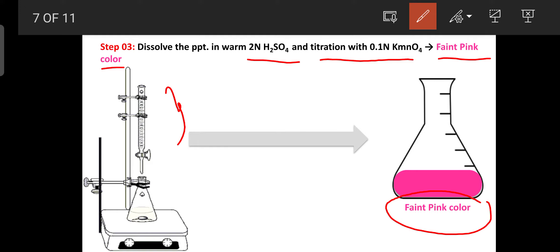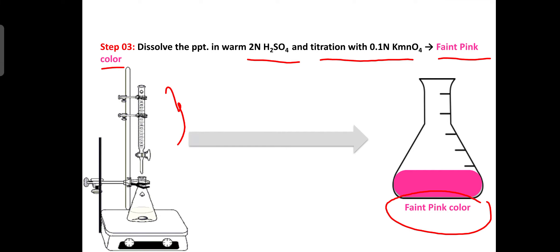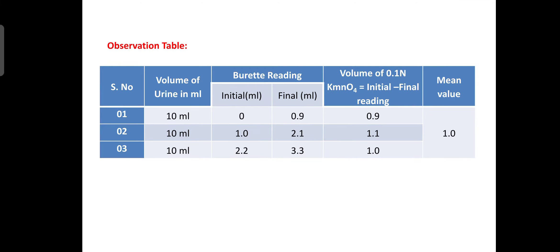Taking 10 ml of urine through steps one, two, and three: the first buret reading is 0.9 ml, the second is 2.1 ml, and the third is 1 ml. The mean volume of KMnO4 required to produce the faint pink end point is 1.0 ml.